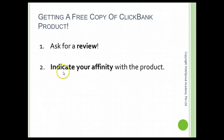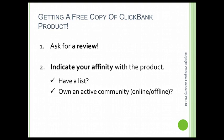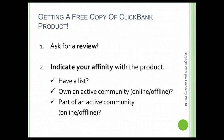The affinity you demonstrate is important. You can follow these key points. First, tell the product creator whether you have a list — meaning an email list of friends, colleagues, or members who might be interested in the product you're going to promote. Second, do you own an active community, online or offline? Some of you may have an active Facebook group or a LinkedIn group in a particular interest area — you can share this with the product creator, and they may even give you more resources to help promote their products. Third, are you currently part of an active community, either online or offline?